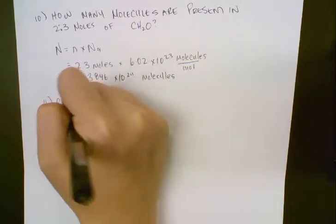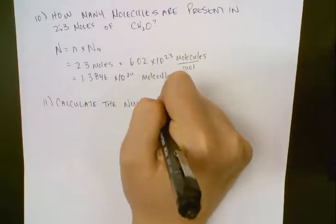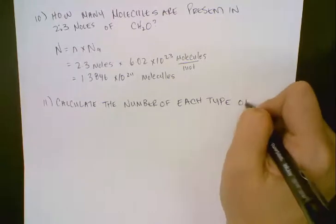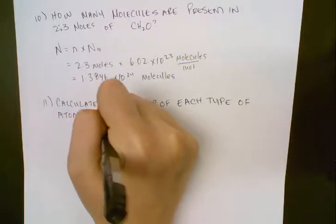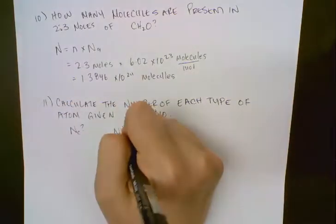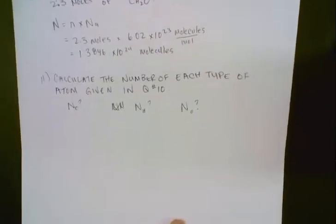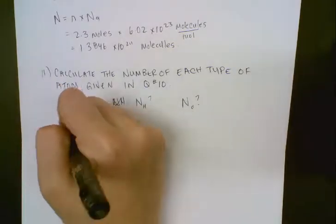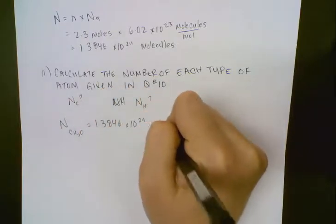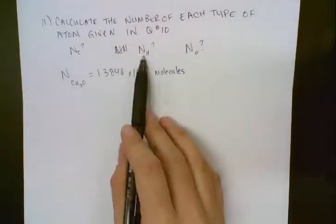Question 11 says: calculate the number of atoms of each type given in question number 10. What this is asking us is how many carbon do we have, how many hydrogen do we have, and how many oxygen do we have. What's convenient is we already know that our number of CH₂O is 1.3846 times 10 to the 24 molecules because we answered that in the previous question. Now we need to convert that into number of carbon, number of hydrogen, number of oxygen.